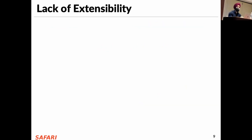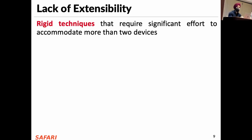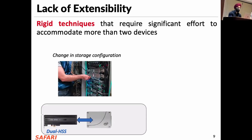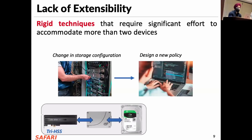The second key shortcoming is that most prior techniques are rigid — they require significant effort to accommodate more than two devices. For example, if we extend a dual hybrid storage configuration to a tri-hybrid configuration, we would have to redesign new policies to handle all different scenarios for promotion and eviction, wasting a lot of designer effort and precious time and resources.